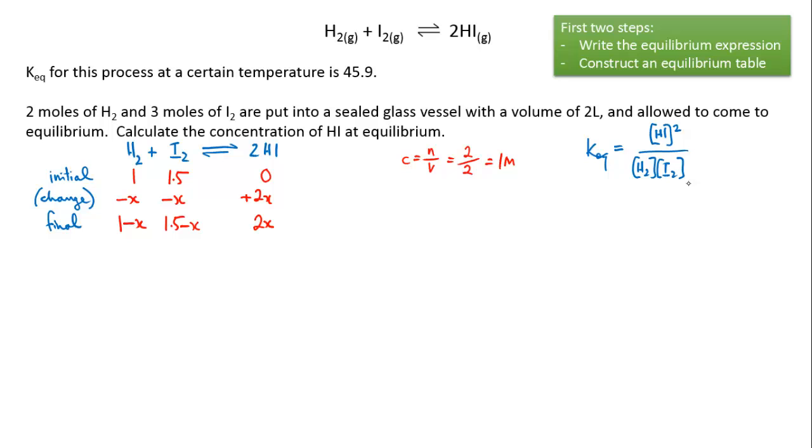We now have equilibrium concentrations in terms of x, and we have an equilibrium expression that relates those concentrations to each other. We're going to substitute our concentrations in terms of x into our equilibrium expression. Keq equals 45.9 which equals the concentration of hydrogen iodide, that's 2x squared, over the concentrations of hydrogen and iodine multiplied together, so we've got 1 minus x and 1.5 minus x.